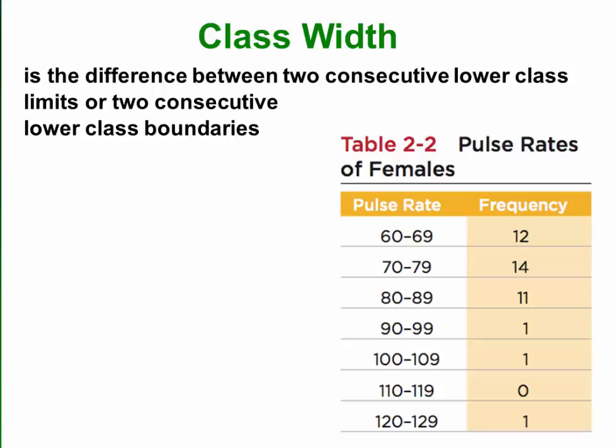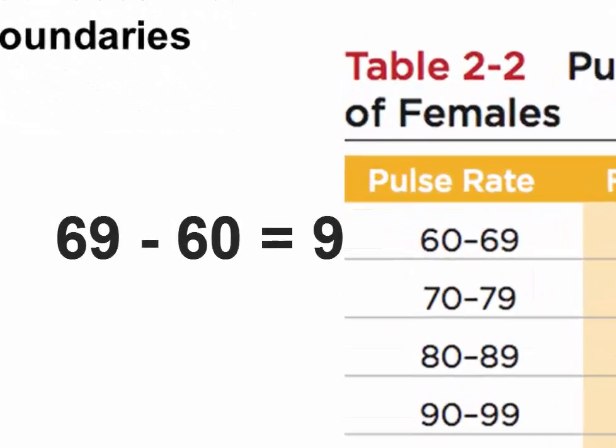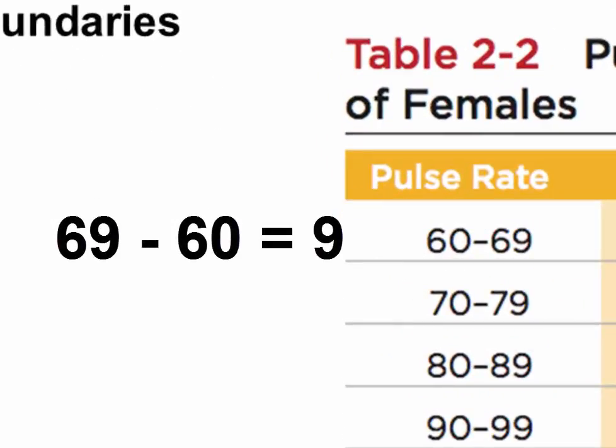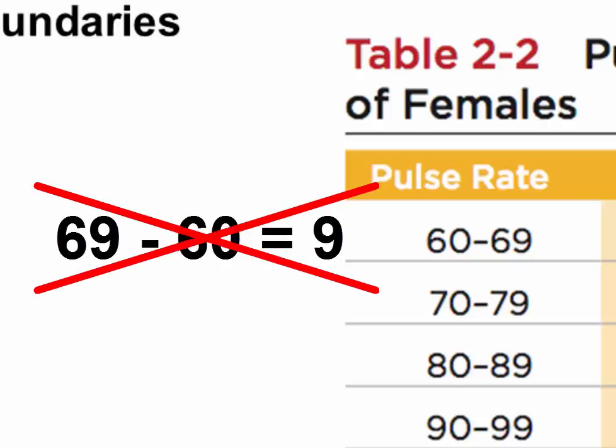Students commonly get questions about the class width marked wrong, because the misconception is that the class width for the first class, for example, is found by taking 69 minus 60, giving a class width of 9. That is incorrect.